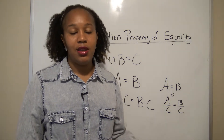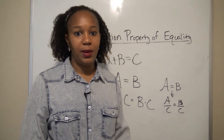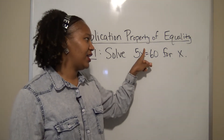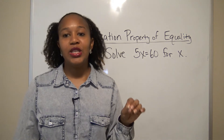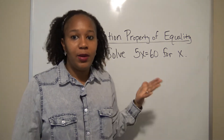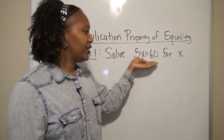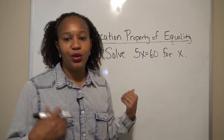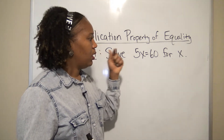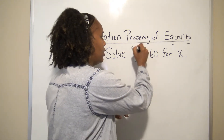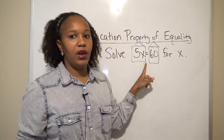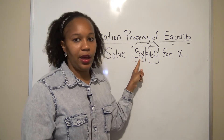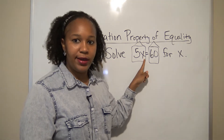Let's look at some examples. For example one, we want to solve 5x equals 60 for x. This is a linear equation — it has an equal sign, has x, and the exponent on x is one. Remember, the goal whenever you're solving an equation is to get x on the side by itself. Think of each side as a house, and think of yourself as the variable x — the goal is to be home alone with some peace and quiet. So you want to get rid of everyone in the house with you.